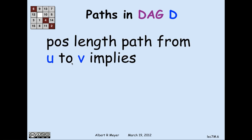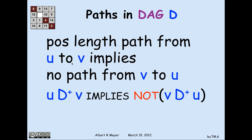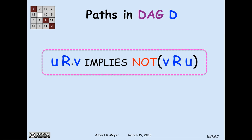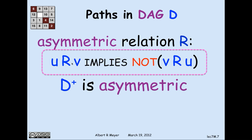Looking at directed acyclic graphs, if there's a positive length path from a vertex u to a vertex v, then since there are no cycles in a directed acyclic graph, there cannot be a path back from v to u. That property is called asymmetry. The positive path relation d+ in a DAG has this asymmetry property: if u can reach v by a positive length path, it is not possible for v to reach u. Abstracted: u r v implies not v r u. By definition of acyclic, d+ is asymmetric in a graph without cycles.